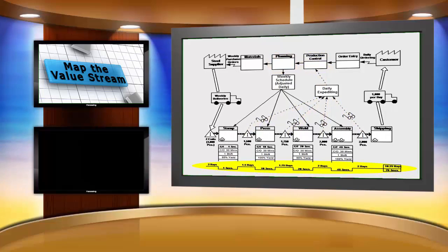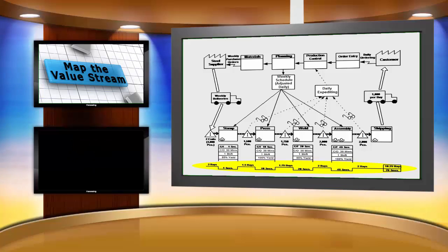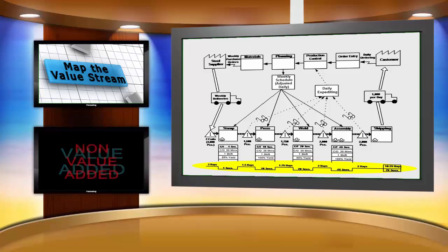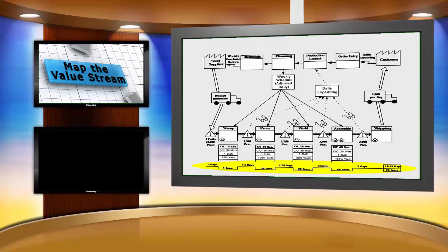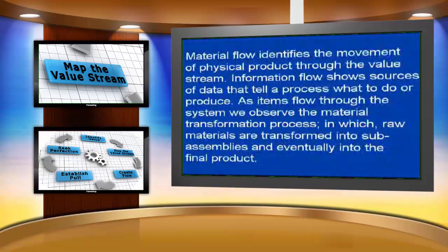This graph along the bottom looks at production lead time — the time required for one piece to move all the way through a process or value stream from start to finish. Envision timing a marked item as it moves from beginning to end. By looking at this graph, we can determine time spent on value-added and non-value-added activities.